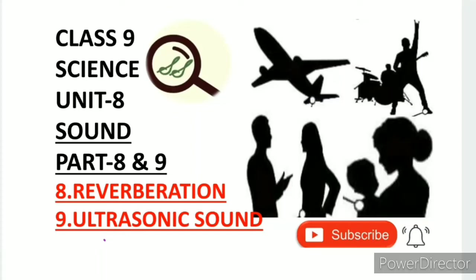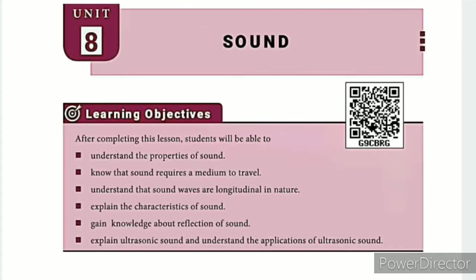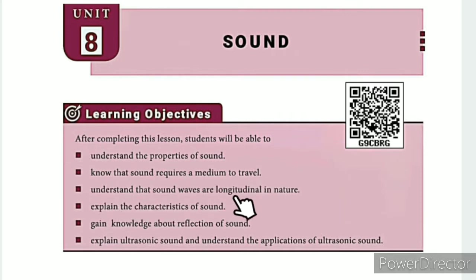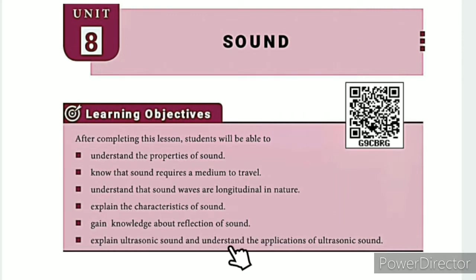Greetings from SS Class 9 Science Unit 8, Sound, Parts 8 and 9: Reverberation and Ultrasonic Sound. The learning objectives are: understand the properties of sound, know that sound requires a medium to travel, understand that sound waves are longitudinal in nature, explain the characteristics of sound, gain knowledge about reflection of sound, and explain ultrasonic sound and understand its applications.